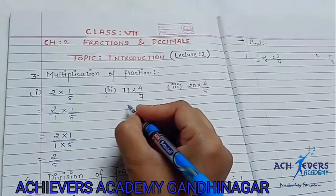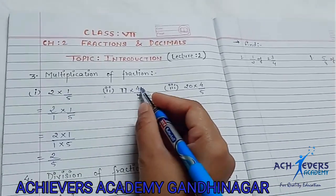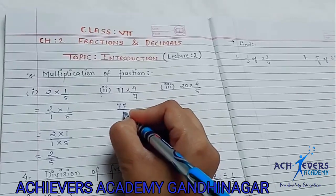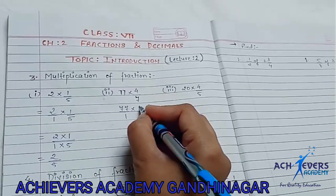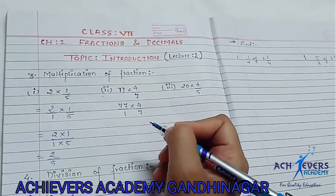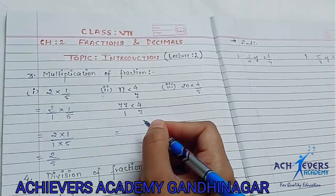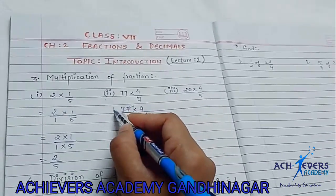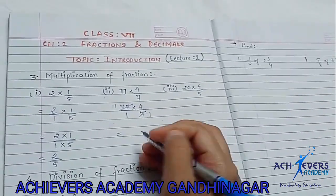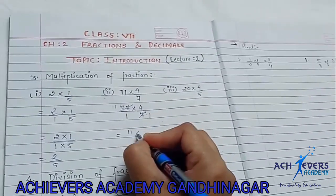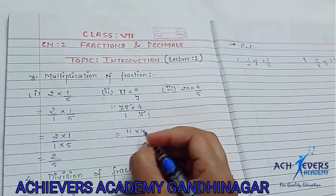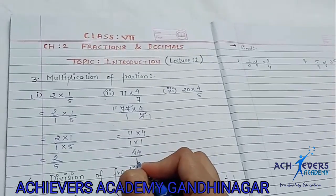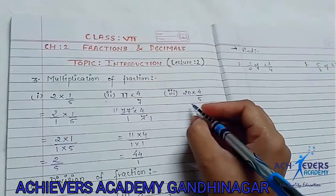Let's go to the next question. I have a value here: 77 into 4 by 7. There is nothing in the denominator, so we will assume 1. Now, if you want to simplify it, you can cancel before multiplying. For example, 7 ones are 7 and 7 elevens are 77. The numerator is 11 into 4, and the denominator is 1 into 1. That means your answer is 44 by 1.